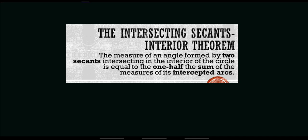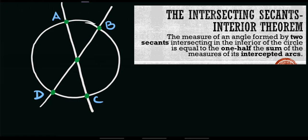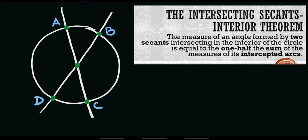According to this theorem, the measure of an angle formed by two secants intersecting in the interior of the circle is equal to one half of the sum of the measures of its intercepted arcs. So we have these two intersecting secants, and for example, you're asked to solve for the value of its interior angle. The intercepted arcs of angle x are arc AB and arc CD.